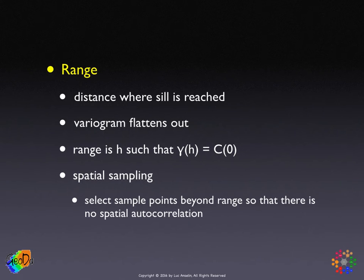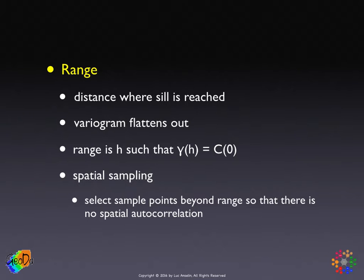The second important concept is the range — the distance where the sill is reached. The range is that h for which gamma(h) equals the variance of the process, c0. Visually, it's the point where the variogram flattens out. There's a very important implication for spatial sampling: since points further apart than the range are not spatially correlated, if we want a sample with uncorrelated observations, we must ensure they are separated by at least the range.